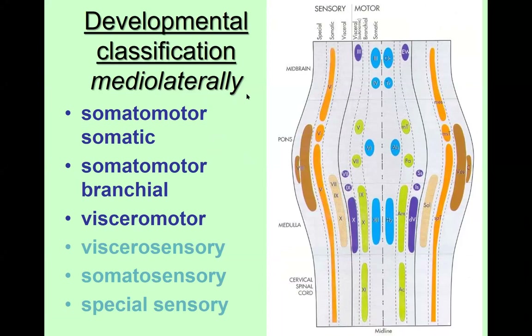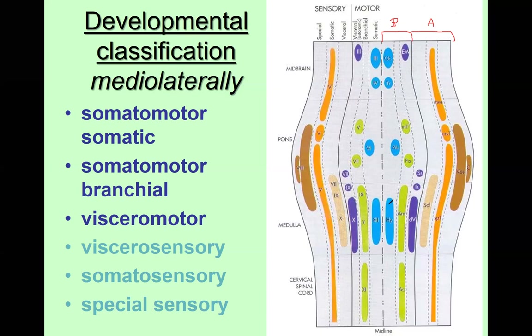I'll go briefly again through the details. We can distinguish something called basal plates, which is motor, and the alar plate, which is sensory. As for the basal plate, this part is somatomotor and somatic, coming from somites. And for today we will need the hypoglossal nerve.